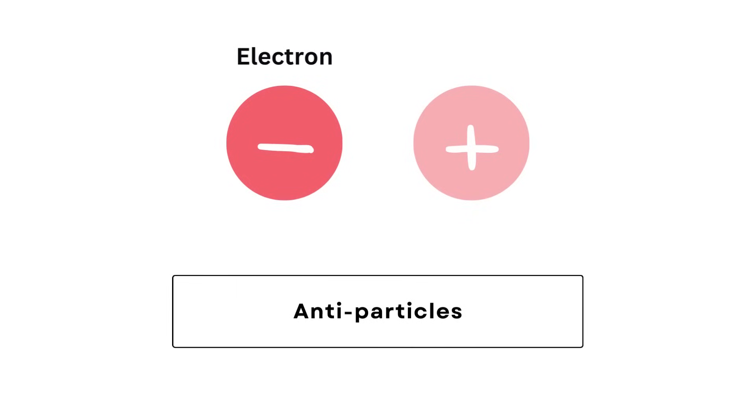As an example, let us consider the electron. Its antiparticle version is what we call a positron. The only difference they have is their charge. Where the electron has a charge of minus 1 times e, the positron has the opposite charge of plus 1e.